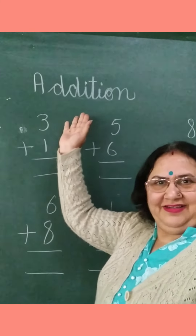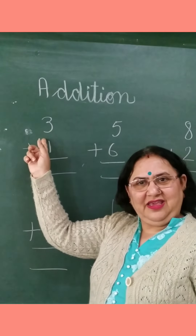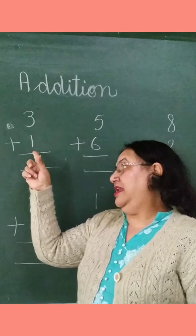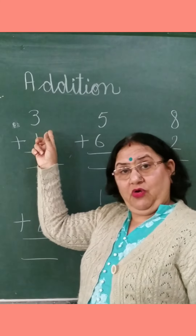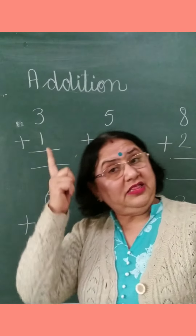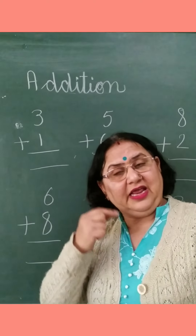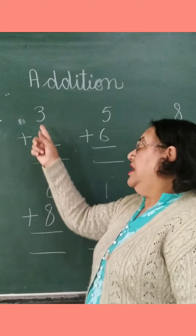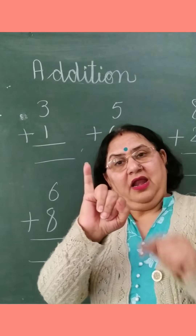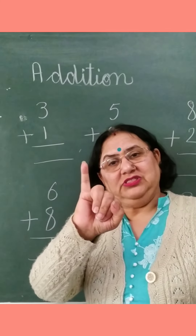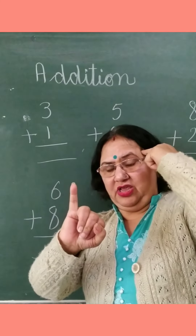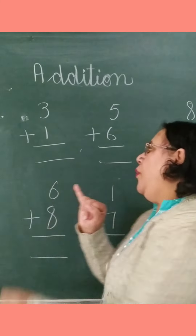The upper number is 3 and lower number is 1. Upar ka number 3 aur neeche ka number 1. This upper number will go in our mind — 3 in the mind. Put a finger, do the action. 3 in the mind, 1 in the hand. You will close the other fingers. 1. And what was in our mind? 3. We will just take out 3 — 3, 4. Very simple.